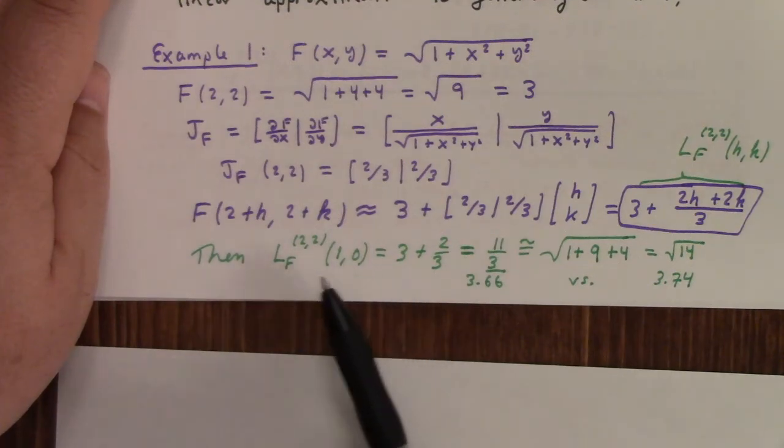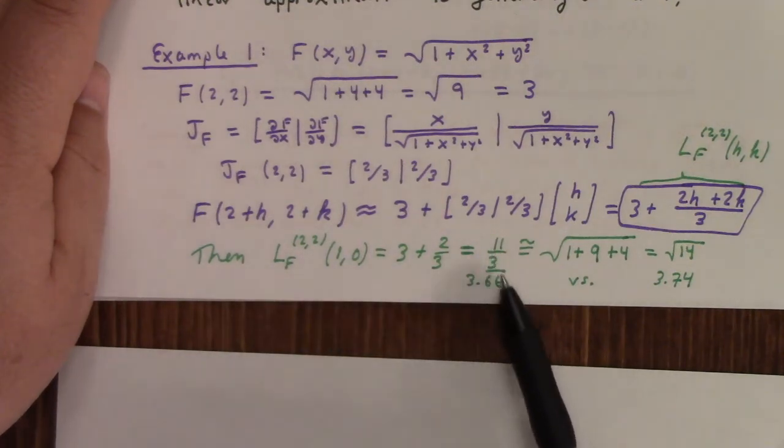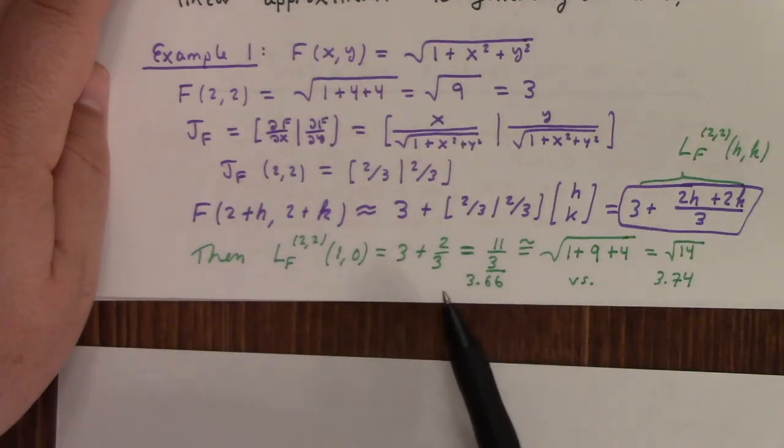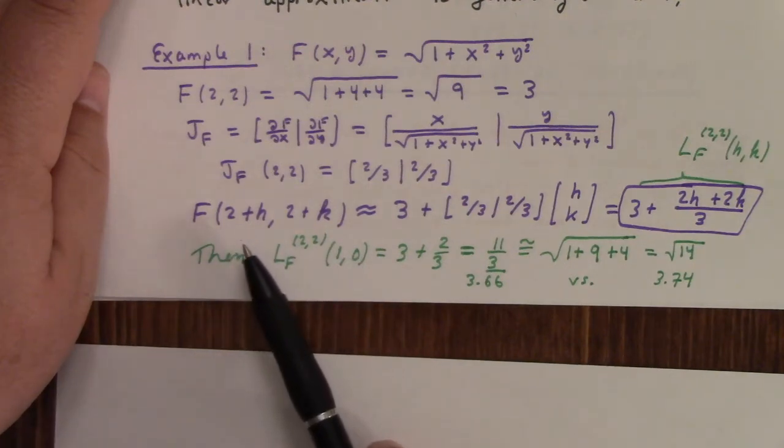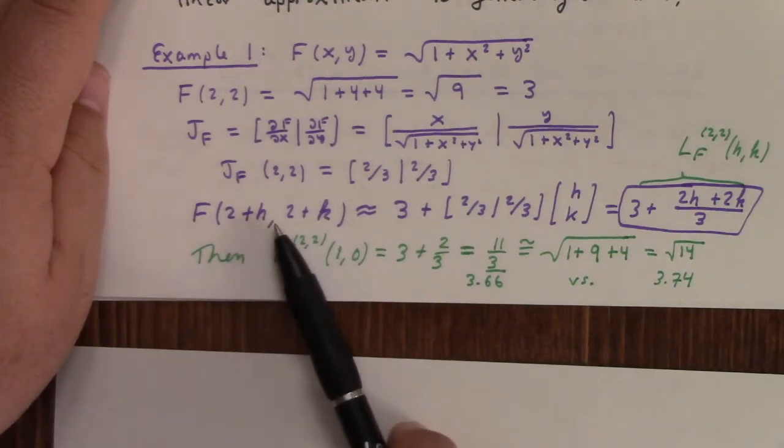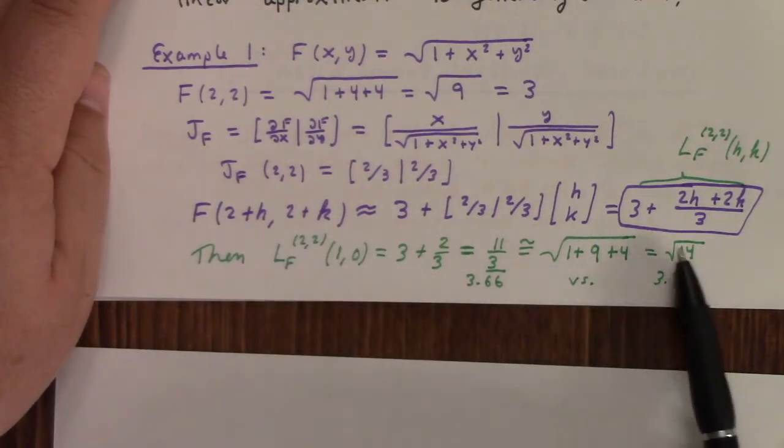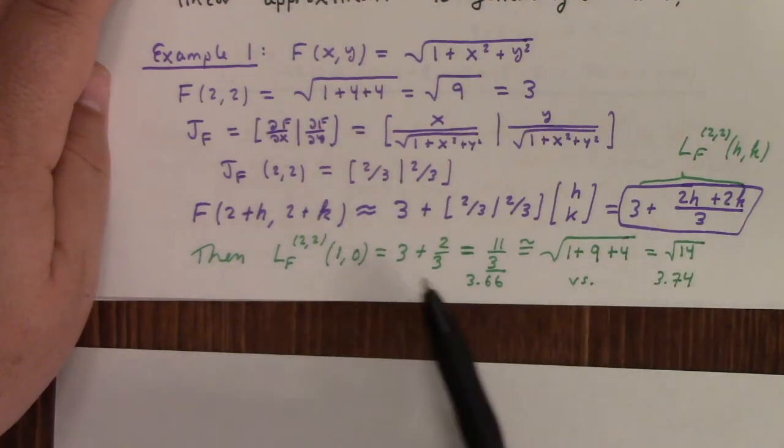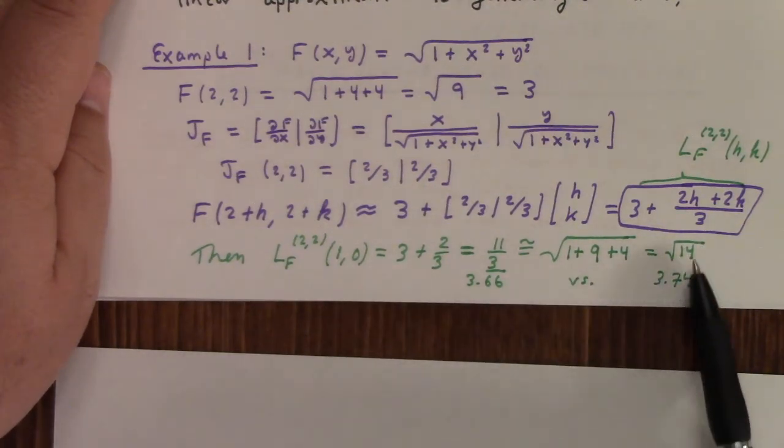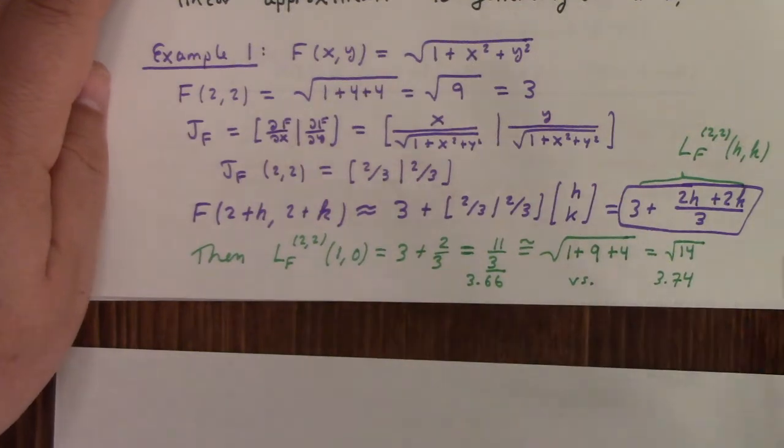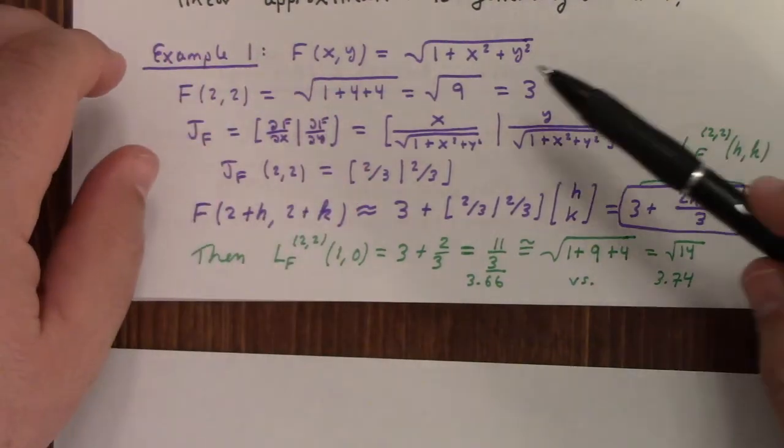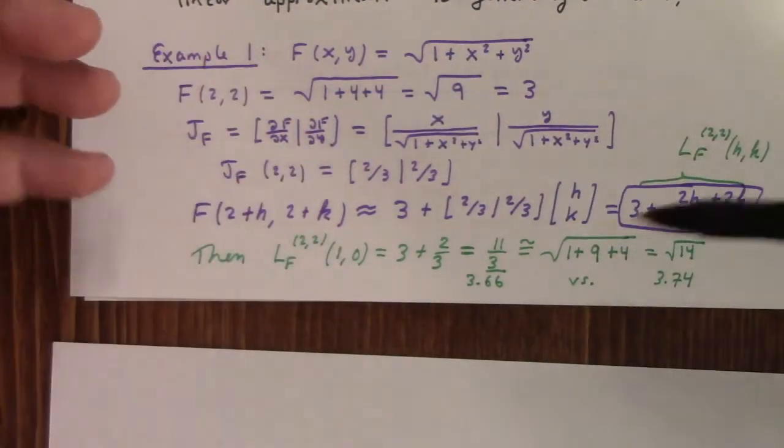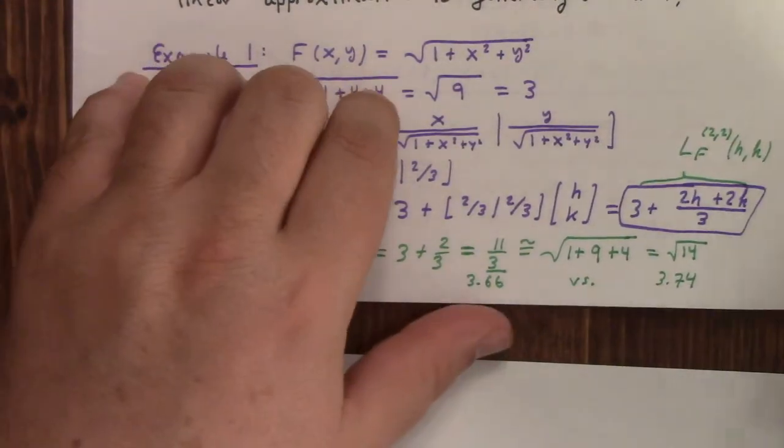And just to see, to check on it, you know, if I plug in (1, 0), I get 11/3, right? (1, 0) would be like what? Well, L_f of (1, 0) in my current notation would be l of, I'm approximating f of... wait, (3, 3/2), which is an approximation to the square root of 14. So the approximation gives me 3.66 repeating. The actual square root of 14 is more like 3.74. Yeah, it's not too shabby. Now, admittedly, this is something I could have done in Calculus 3 because it's from R^2 to R. So like, okay, this isn't really new. Fine, you got me.